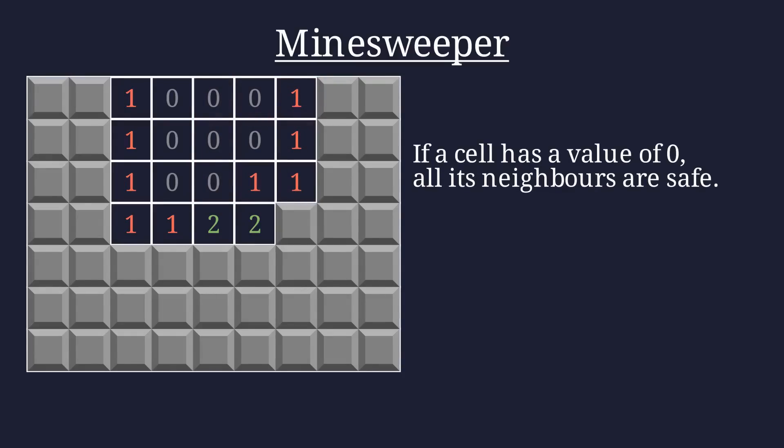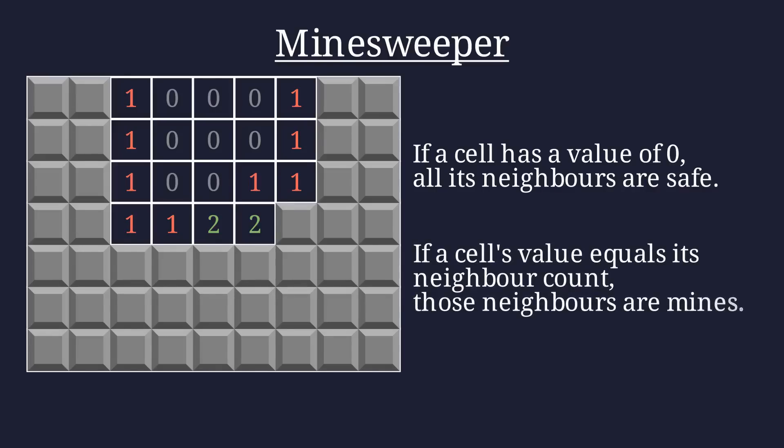Now that we've reached the point we need to consider the mines themselves, we need to introduce the second rule of our strategy. If a cell's value equals its neighbor count, those neighbors must be mines. For example, this cell here only has one neighbor we haven't stepped on, and its value is one. Therefore, that untouched cell must be a mine, so we'll flag it indicating that fact.